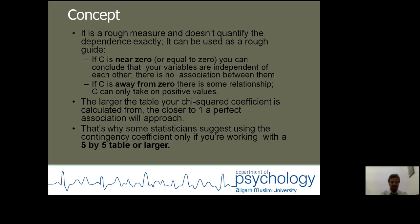The larger the table, the chi-square value is calculated from, the closer to one a perfect association will approach. That is why some statisticians suggest using the contingency coefficient only if you are working with a five-by-five table or larger.